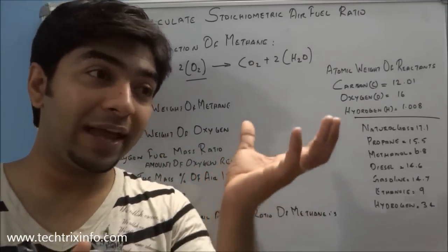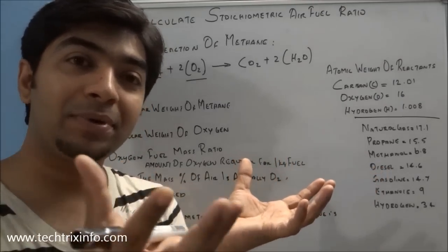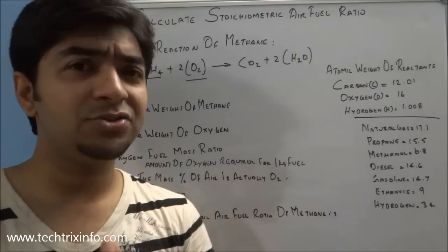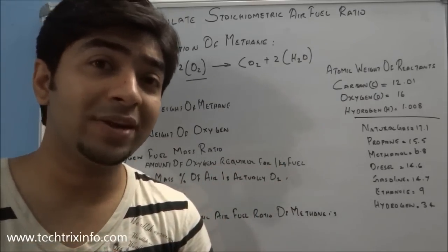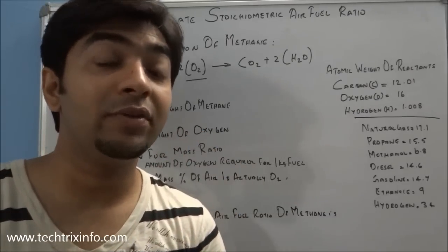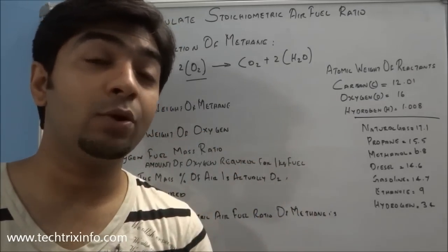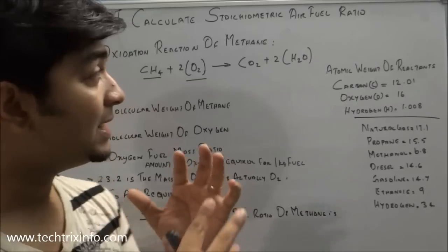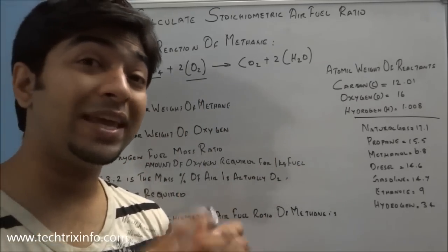The stoichiometric air-fuel ratio is exactly the amount of air required to burn the supplied amount of fuel completely. There is no real engine that works on a stoichiometric air-fuel ratio because combustion is a short-lived process, and that's why the complete fuel cannot be burned during that process.